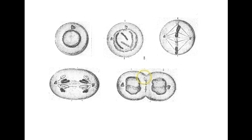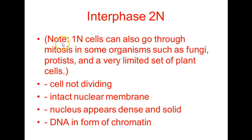In terms of haploid and diploid, these cells start out as diploid, and with mitosis there will be no changes in chromosome number — it will be 2N at every stage. As a side note, in some organisms such as plants, fungi, and algae, haploid cells can go through mitosis. But mainly in animal cells, if you have mitosis, you start with a diploid cell and it will remain diploid all the way through the process.